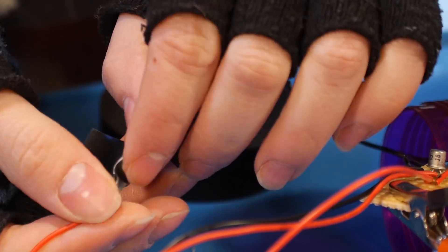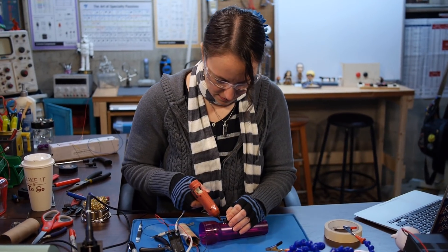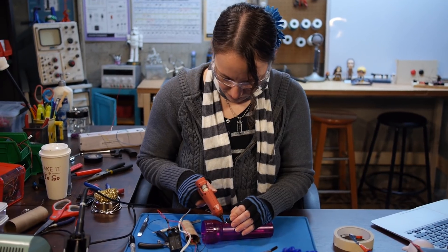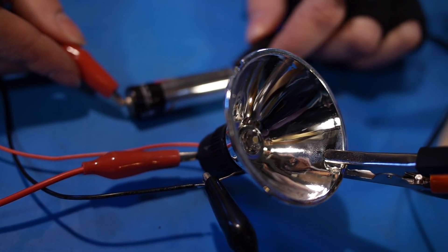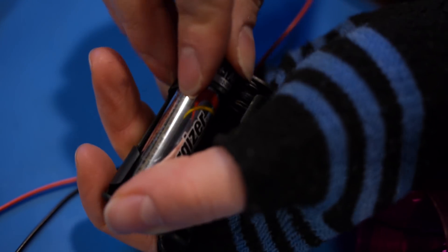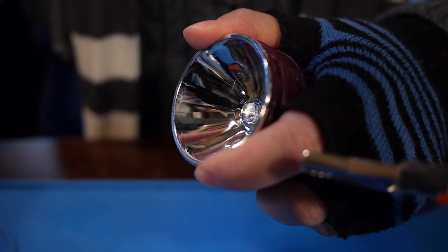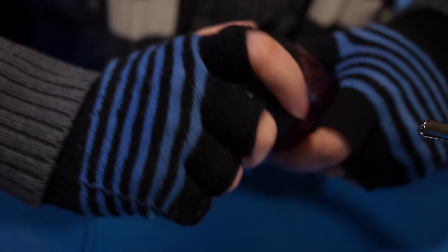Put tape over those connections to prevent any shorts. If we connect our used battery straight up to the LED, the LED does not turn on. But if we put it into our battery juicer here, it works.